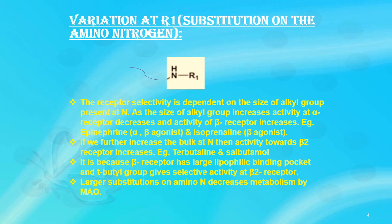Receptor selectivity is dependent on the size of the alkyl group on nitrogen. As the size of the alkyl group increases, activity at the alpha receptor decreases and activity at the beta receptor increases. For example, comparing epinephrine and isoprenaline: epinephrine contains a methyl nitrogen group and isoprenaline contains an isopropyl nitrogen group. This increase in alkyl group size shifts the non-selective nature of epinephrine towards beta selectivity in isoprenaline.